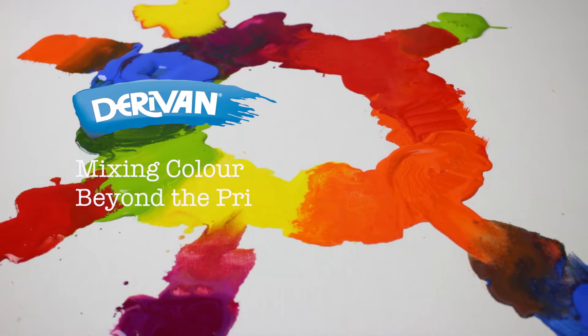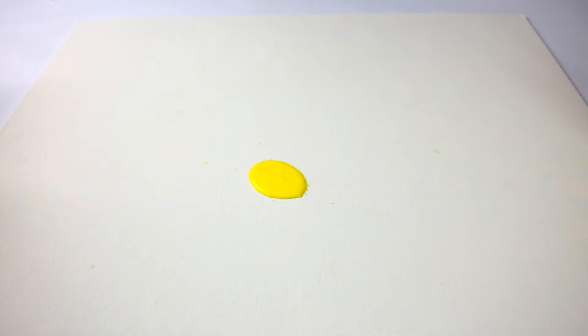Hey, it's Paul from Derivan, and today I'm using some Matisse fluids. We're going to explore the color wheel. I'm using Yellow Light Hansa, Naphthol Scarlet, and Cobalt Blue.